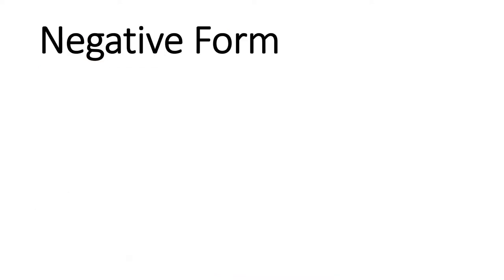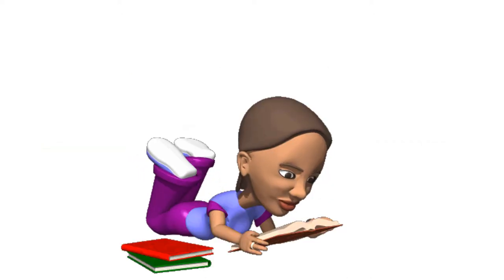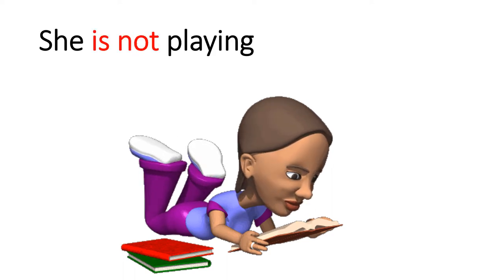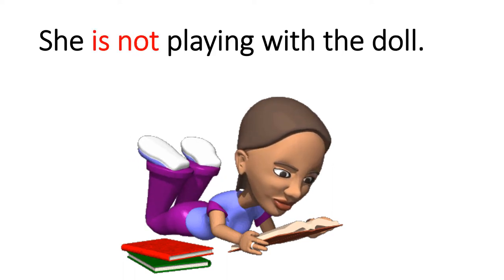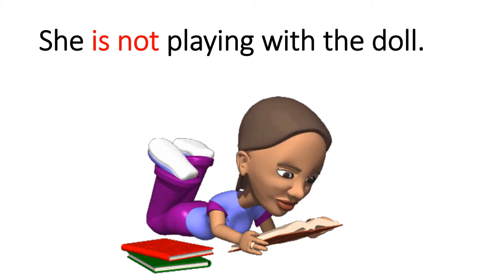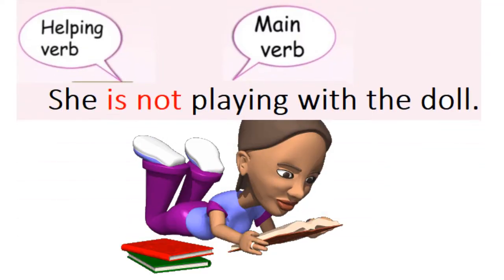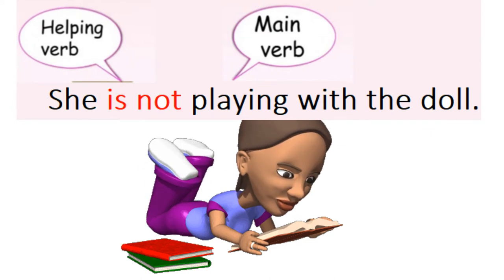Negative form में क्या करते हैं हम? हम helping verb के साथ not लगाते हैं. जैसे: She is not playing with the doll — यह लड़की गुड़िया के साथ नहीं खेल रही. इसमें 'is' helping verb है, 'playing' main verb है, और 'not' negative form है.